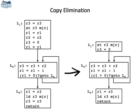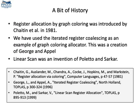IRC was introduced by George and Appel in a paper from 1996. But the more general idea of register allocation by graph coloring was invented by Gregory Chaitin while he was working at IBM in 1981.